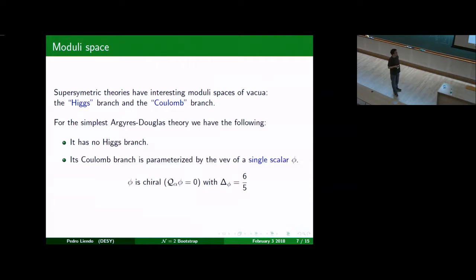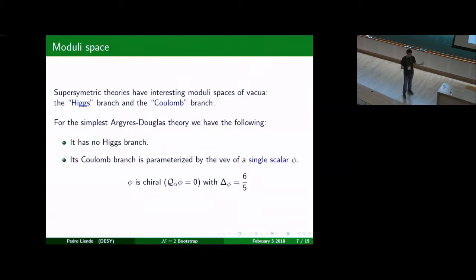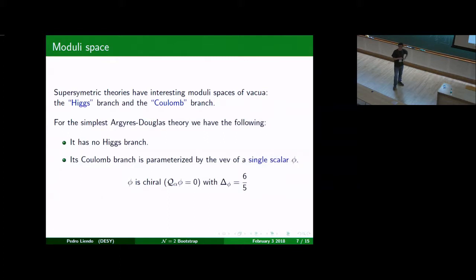So it is a simple theory. One argument is because it has the simplest possible 2D chiral algebra. The moduli space is also very simple. N equals two theories have a moduli space of vacua. In N equals two theories, the moduli space of vacua can generically be divided into something called the Higgs branch and something called the Coulomb branch. This theory doesn't have a Higgs branch, and the Coulomb branch is very simple — it's parameterized by the VEV of one single scalar. And we know the dimension of this single scalar: the chiral field in this theory has dimension 6 over 5.